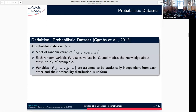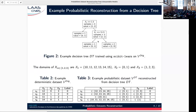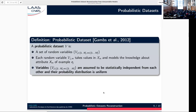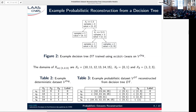More formally, a probabilistic dataset is a set of random variables, one for each attribute of each training example. Each random variable models the knowledge we have regarding that attribute of that example, and it takes values in the corresponding attribute's domain. Importantly, the random variables are assumed to be statistically independent from each other, because there can be no correlations. Each random variable has a defined domain, and the probability distribution is assumed to be uniform — it's simply a set of possible values.